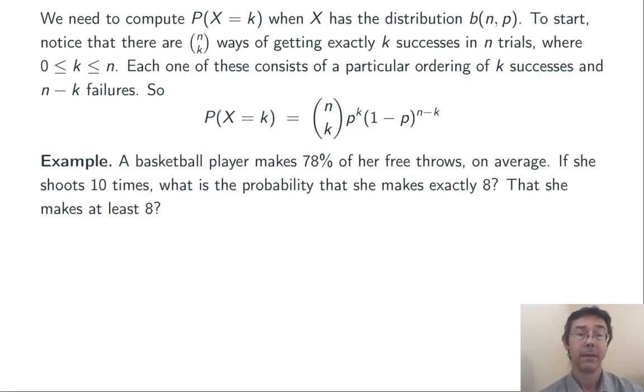Here's an example. A basketball player makes 78% of her free throws on average. And here, we're going to view her taking a free throw as a probability experiment, assuming that it really is random whether she makes the shot or not. If she shoots 10 times, what's the probability that she makes exactly 8 shots? That she makes at least 8 shots?